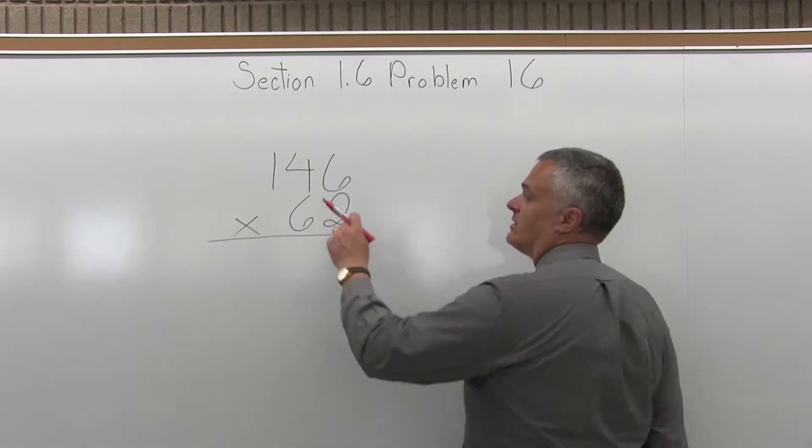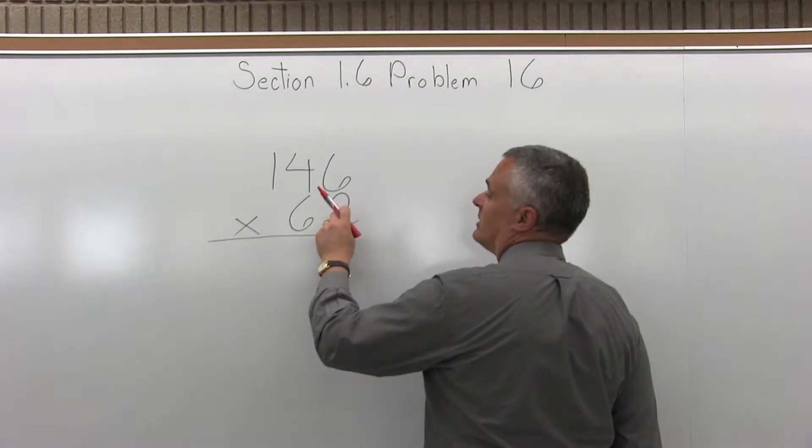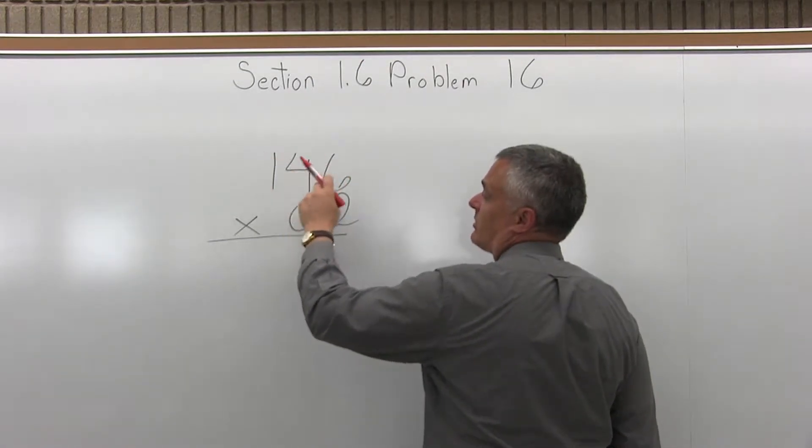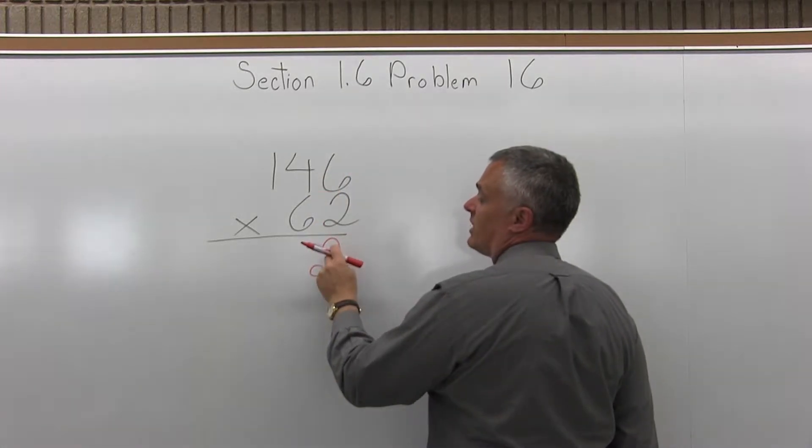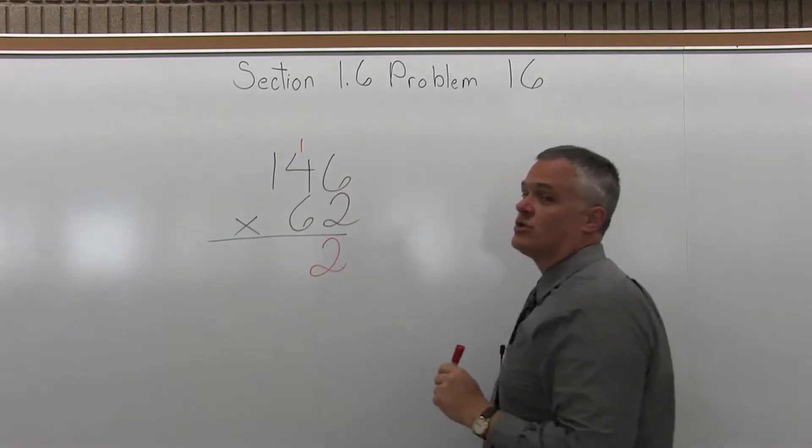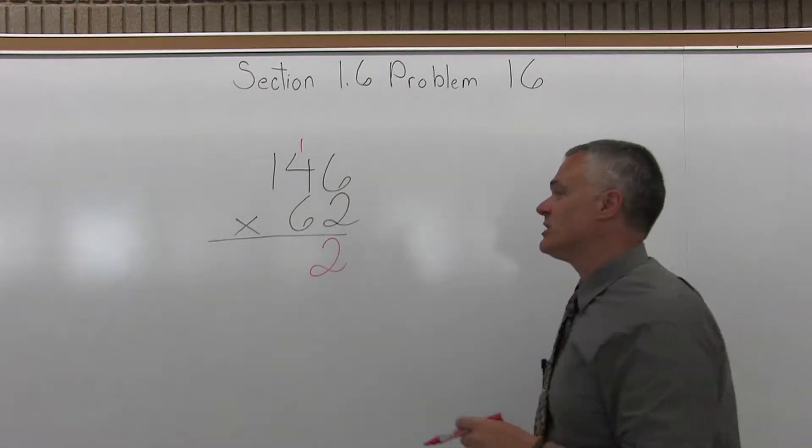To start, the number in the bottom rightmost position gets multiplied out through the top row first. So 2 times 6 is 12. You put the 2 from the 12 in the rightmost position, and the 1 from the 12 gets carried to the top of the next column over to the left.